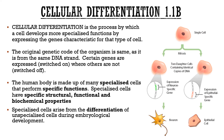Looking at the diagram: my neuron and my epithelial cell contain the exact same DNA. In the neuron cell I've activated the green section and turned off the rest; in the epithelial cell I've turned off the green section and turned on the red section. The human body is made up of so many specialized cells to perform specific functions — on the surface it seems simple, but it really, really isn't.